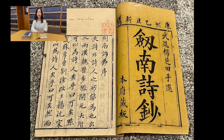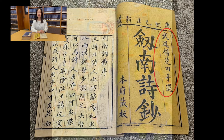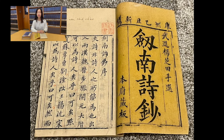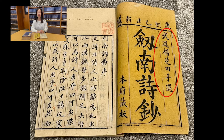Coming back to the inner cover — on the right side is written Wu Jing Yangtianzhi Shouxuan. Wu Jing is an area located in Jiangsu. The name Yangtianzhi was the editor and selector of these poem selections. He was a high-level scholar in the era of Kangxi. His original name was Yangtian, and Zhitian was his literary name. So Wu Jing Yangtianzhi Shouxuan includes information about the editor's name, birthplace, and identity.